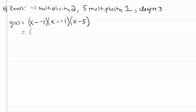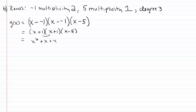Let's take this a little bit further. Negative negative one makes plus one, so we'll have x plus one times x plus one times x minus five. Foiling out the first pair: x times x gives x squared, x times one gives x, then one times x gives another x, and one times one gives plus one.